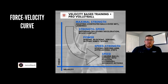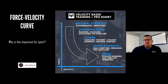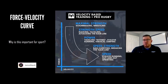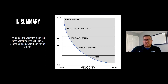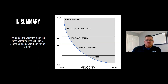In rugby, max strength applies to scrumming, attacking the gain line, getting hit, and carrying the ball, while the speed range covers evasive running and straight-up sprinting depending on your position. We can see that training all variables along the force-velocity curve creates a more powerful and robust athlete. We've looked at how max strength, accelerative strength, strength-speed, speed-strength, and speed transfer to basketball, volleyball, and rugby — and you can apply this to any sport.